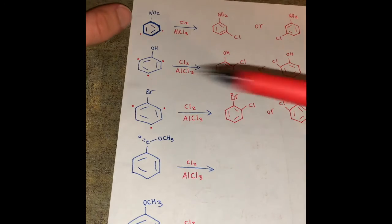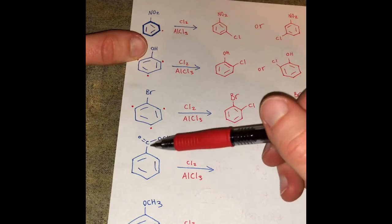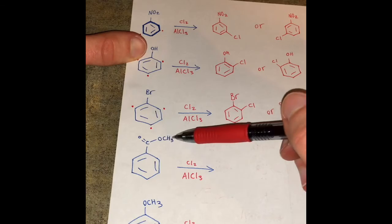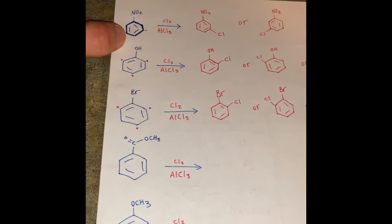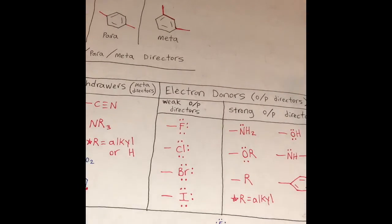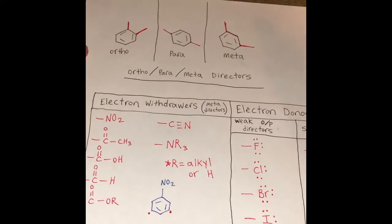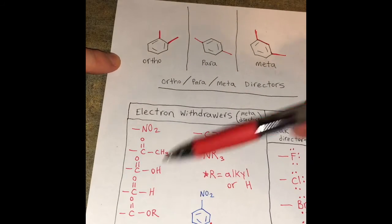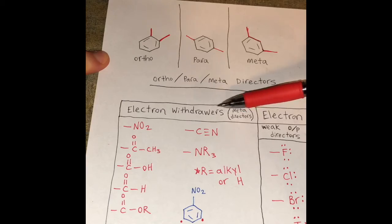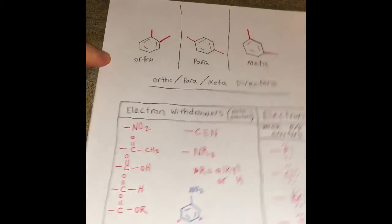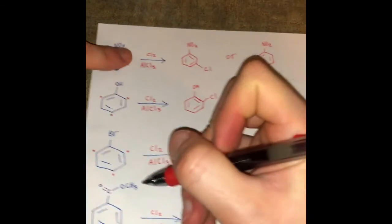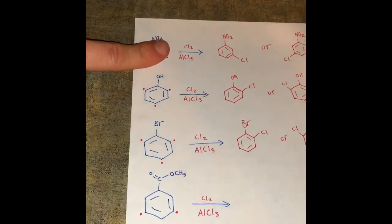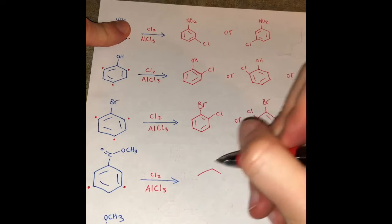Okay now we have this group on our benzene. It's a C double bond O with an OCH3. Now if we look at our chart you can see that we have this C double bond O with an OR group so that's what we're dealing with. This is an electron withdrawer so it's going to meta direct. So I'm going to put my dots in at the meta position and that will tell us what products we can get.